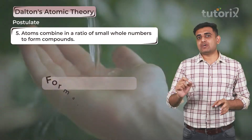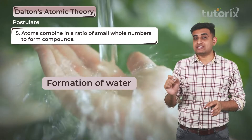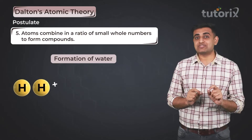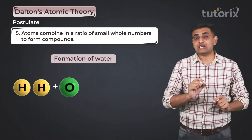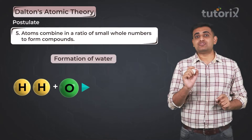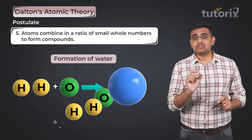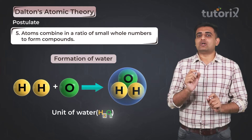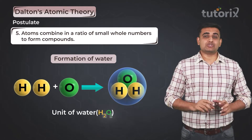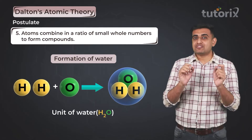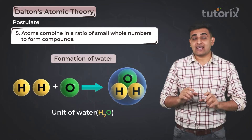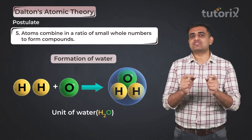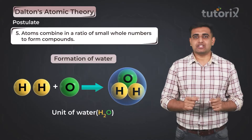For instance, in the formation of water, two atoms of hydrogen react with one atom of oxygen to form one unit of water. Here, two and one are whole numbers. This is how the fifth postulate explains the combination of different atoms in terms of simple whole number ratios.